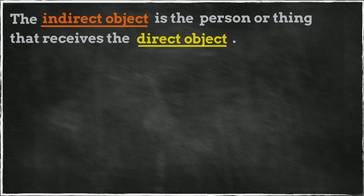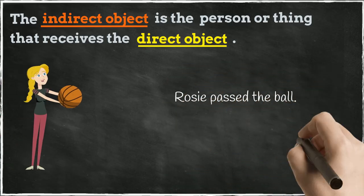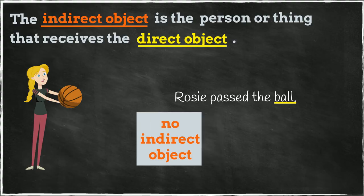Let's go back to this sentence: Rosie passed the ball. The direct object is the ball. Who or what is receiving the ball? Nothing is. So, in this sentence, there is no indirect object.